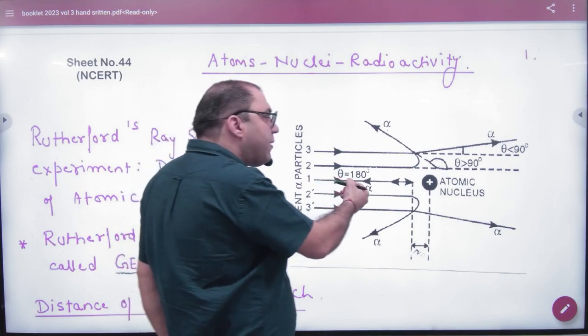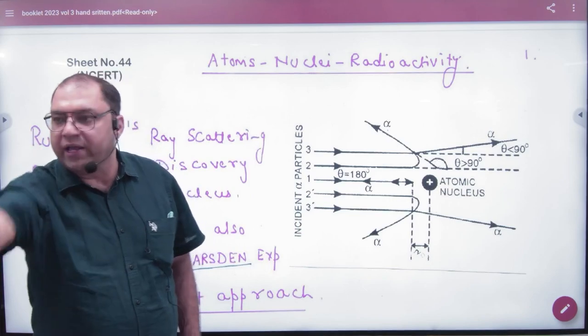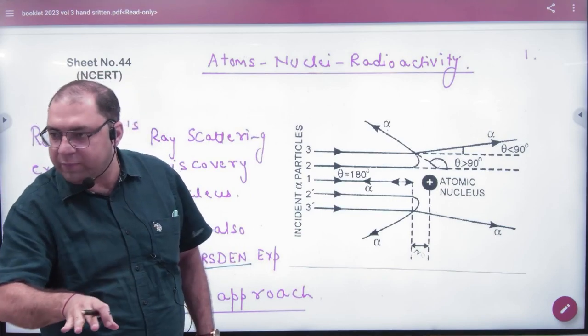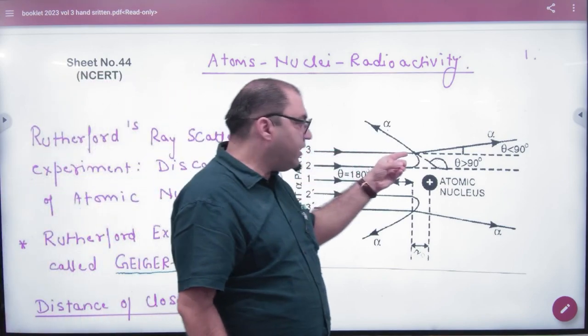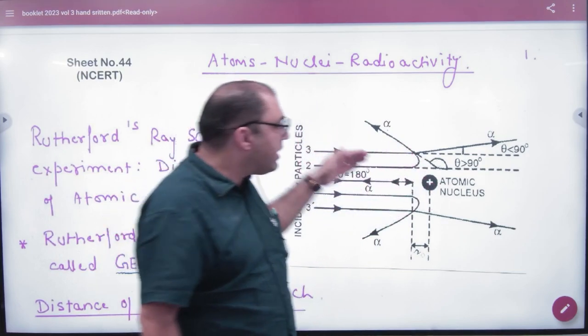But alpha particles that are a little further from the nucleus did not repel or less, so alpha particles have less repulsion, so deflection is less than 90 degrees.